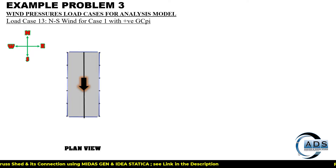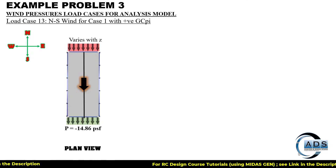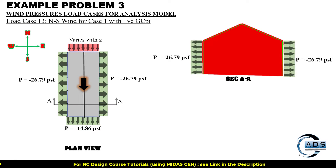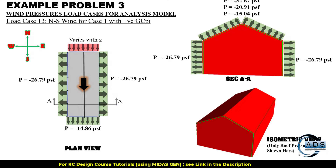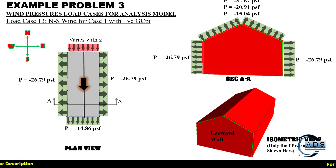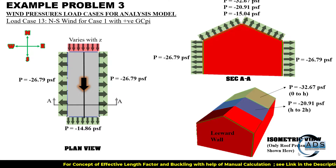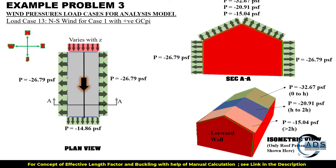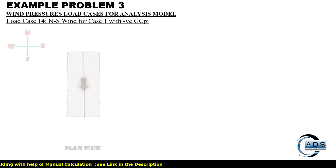Similarly, load case 13: wind is blowing from north to south, so this wall becomes the windward wall, this is the leeward wall, and these are the side walls in section AA. Same pressures but from the opposite direction. In the isometric view, this is the leeward wall, and the pressures from 0 to h, h to 2h, and greater than 2h are all away from the surface. Load case 14 follows similarly.